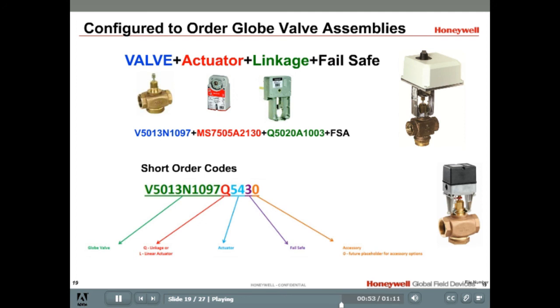Also, each character of the short order code corresponds to a certain characteristic of the valve and valve assembly. For more information on the different valve and actuator combinations that can be ordered as assemblies, refer to the Global Fuel Device Application and Selection Guide or the FastTrack tool.